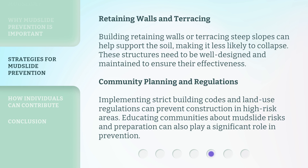Retaining walls and terracing: building retaining walls or terracing steep slopes can help support the soil, making it less likely to collapse. These structures need to be well designed and maintained to ensure their effectiveness. Community planning and regulations: implementing strict building codes and land use regulations can prevent construction in high-risk areas. Educating communities about mudslide risks and preparation can also play a significant role in prevention.